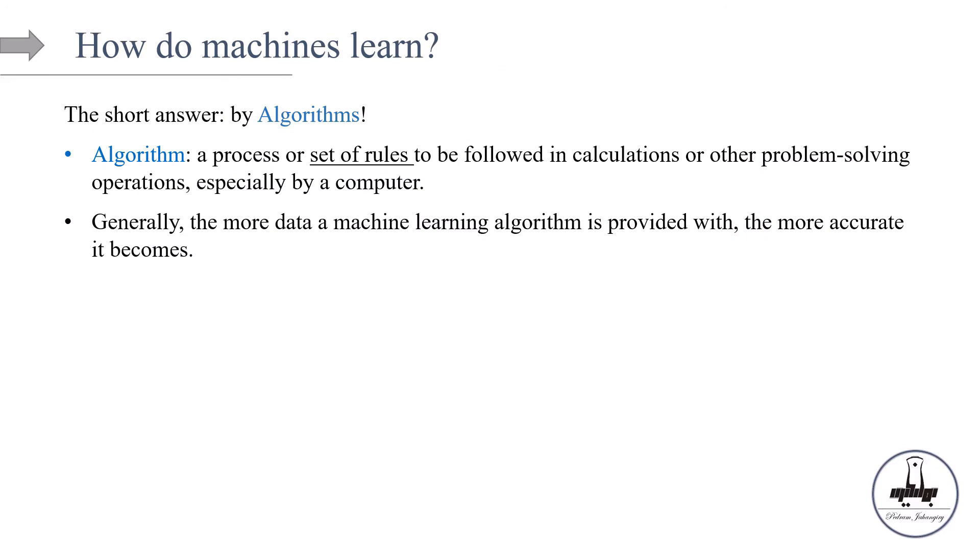So, how do machines learn? The short answer is, by algorithms. An algorithm is a process or set of rules to be followed by computers in calculations or other problem-solving operations. Generally speaking, the more data a machine learning algorithm is provided with, the more accurate it becomes.